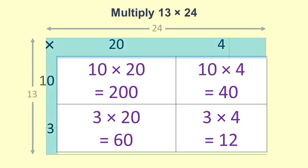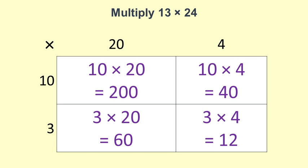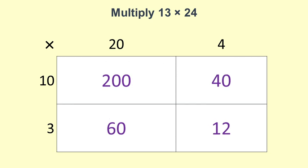This is the grid for 24 by 13. We use one row for each place value and one column for each place value. Tens and ones and tens and ones.